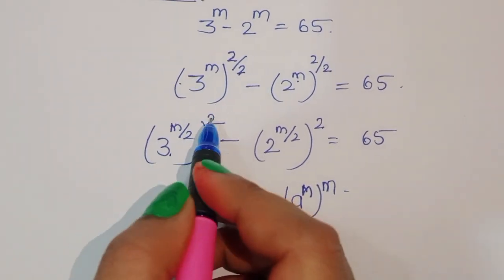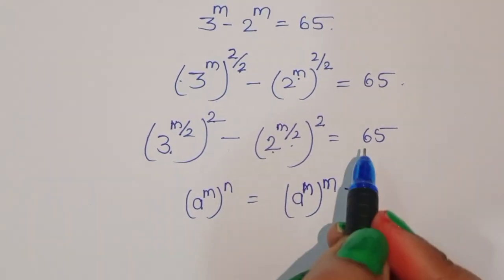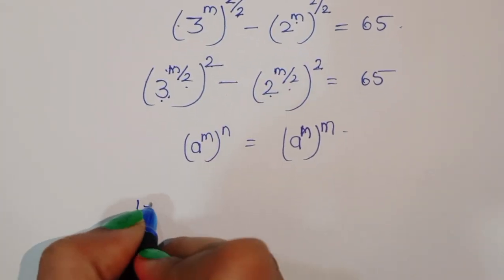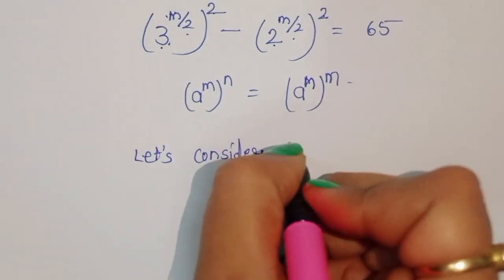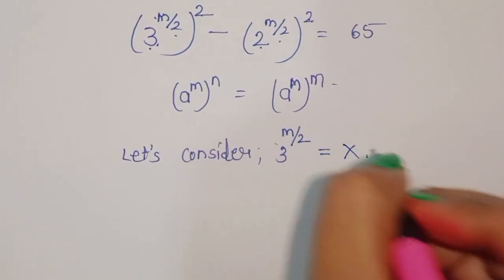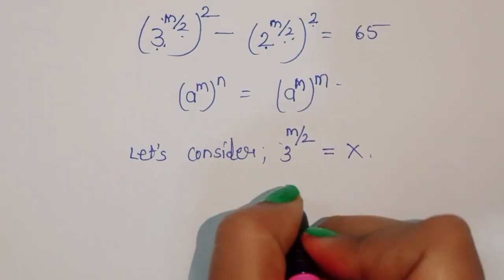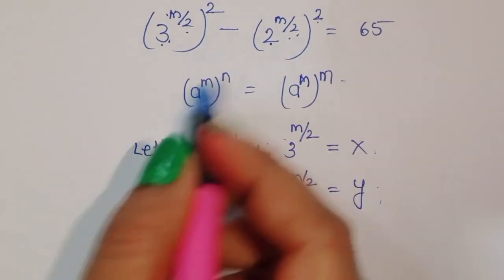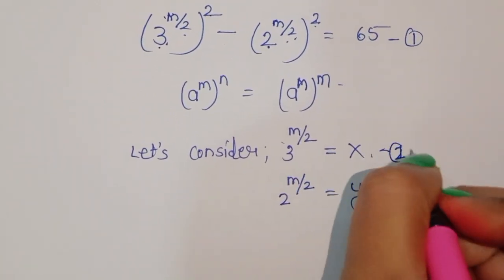So we have (3 power m/2) squared minus (2 power m/2) squared equals 65. We consider: let 3 power m/2 equal x — this is equation 1, and let 2 power m/2 equal y — this is equation 2. The original equation with x and y is equation 3.